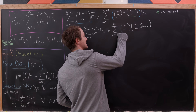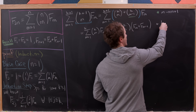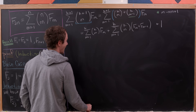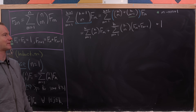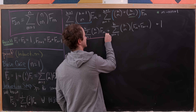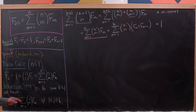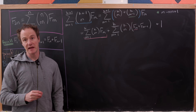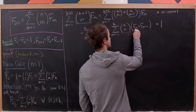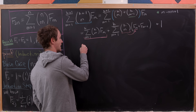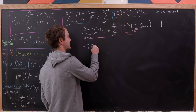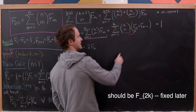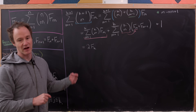Now I can apply the induction hypothesis in two places. The sum involving k choose m times f sub m and the sum involving k choose m times f sub m-1 (after distributing the binomial coefficient) each correspond to cases in the induction hypothesis. After applying it to both, I get two copies of f sub 2k, plus the leftover terms — f sub m+1 multiplied by the binomial coefficient, and the plus 1 term.